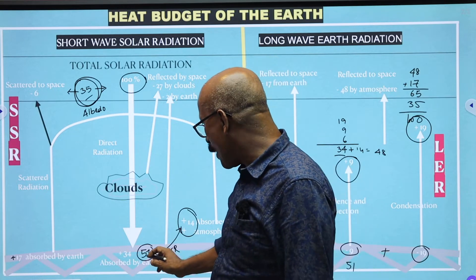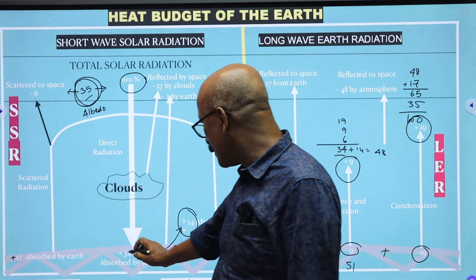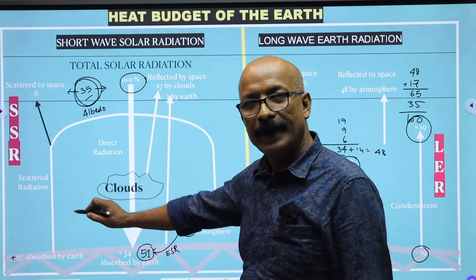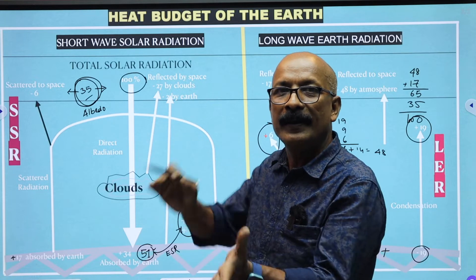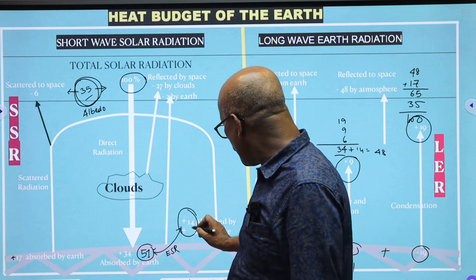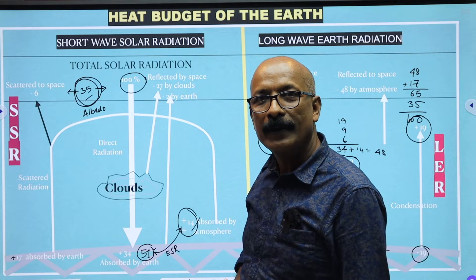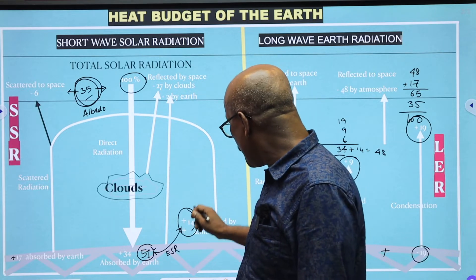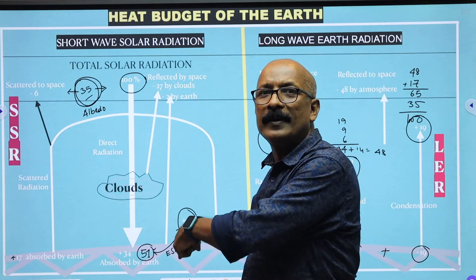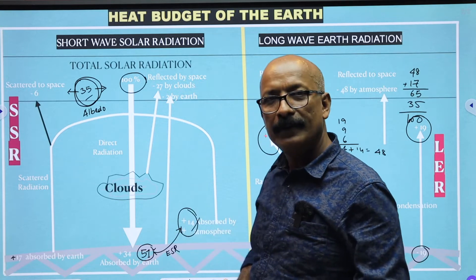Out of 100 units of solar energy, 51 units directly reach the surface of the earth. That leaves 49 units that do not directly reach the surface. Of those, 14 units are absorbed towards the surface by the atmosphere, while 40 units are not capable of reaching the surface of the earth and are ultimately absorbed in the atmosphere. So 51 plus 14 gives us 65 units.